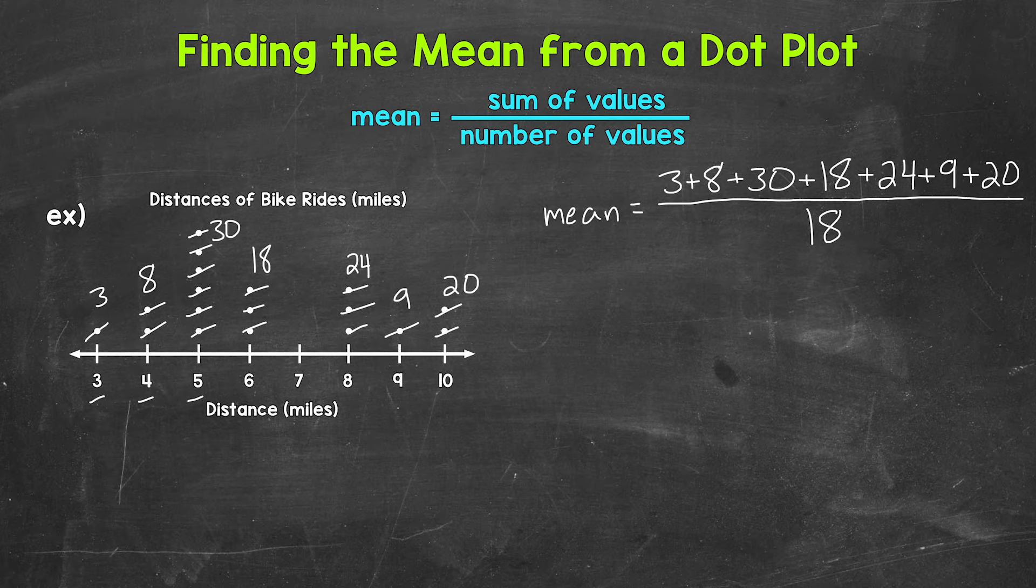Now that we're all set up, we can find the mean. So let's find the sum of the values first. 3 plus 8 is 11, plus 30 is 41, plus 18 is 59, plus 24 is 83, plus 9 is 92, plus 20 is 112.